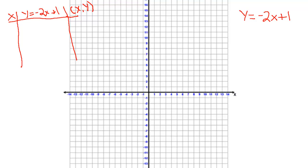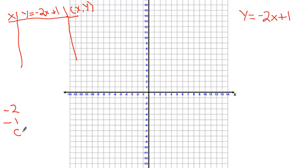When we graph these functions, I want you to use several numbers. I always want to get a couple of numbers in the negative area, I always want to go through the origin, and I always want to get some numbers in the positive area. Most of our functions will be linear, but later on we get curves that may do something special on each side. So a little bit later I'm going to ask you to do x values of negative 2, negative 1, zero, 1, and 2.